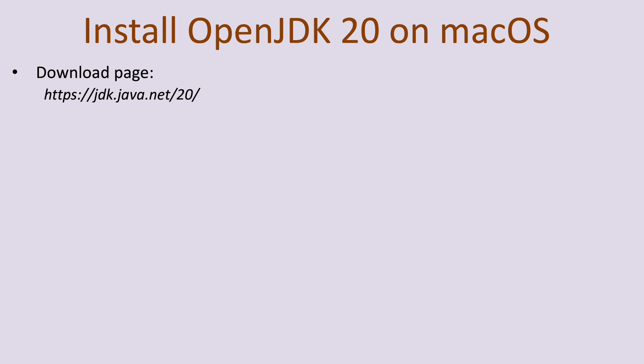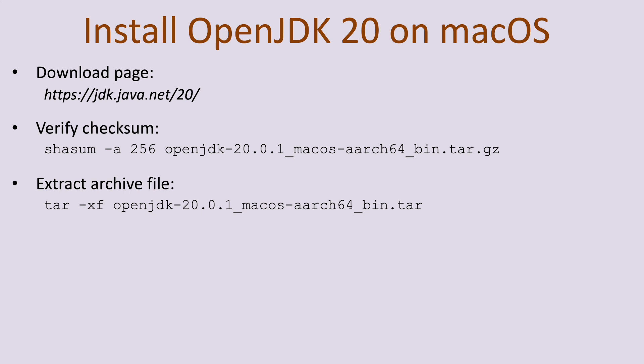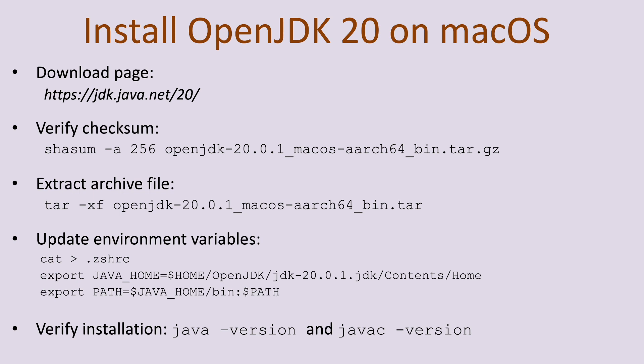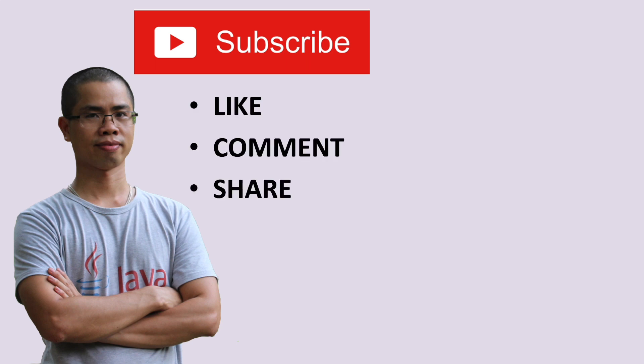First, download the binary distribution of OpenJDK 20 from jdk.java.net/20 and verify the checksum using the shasum command. Then extract the archive and update the JAVA_HOME and PATH system environment variables by creating a shell resource file using the cat and export commands. Verify the installation using the java -version and javac -version commands. Please subscribe to the channel, like, comment, and share this video. Thanks for watching.